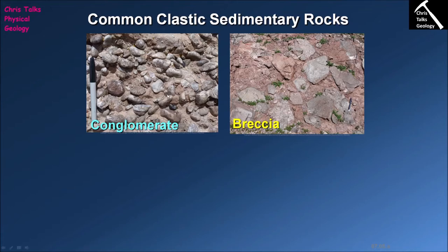If they're both essentially the same size of rock clasts, how do we differentiate between the two? Well, the difference is all to do with how well rounded the clasts are. Conglomerates contain clasts which are rounded to sub-rounded, whereas breccias contain clasts which are angular. So once again, if the rock is dominated by clasts in excess of two millimeters, we classify it as either a conglomerate or a breccia depending on how angular or rounded the clasts are.